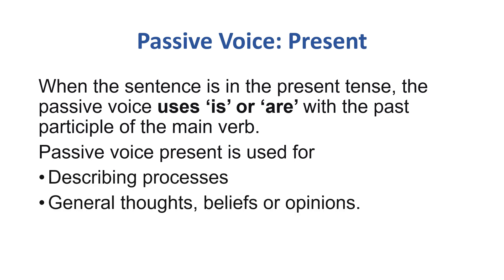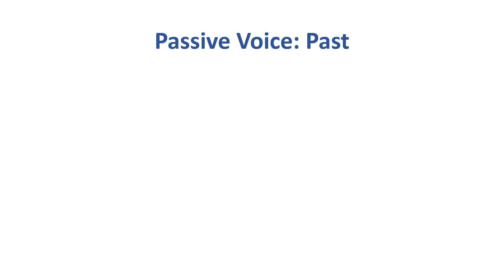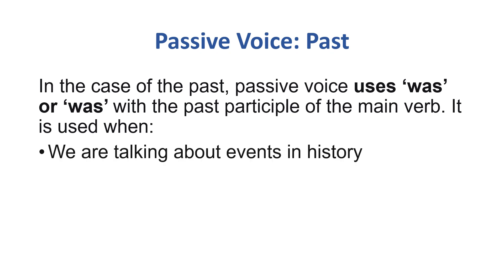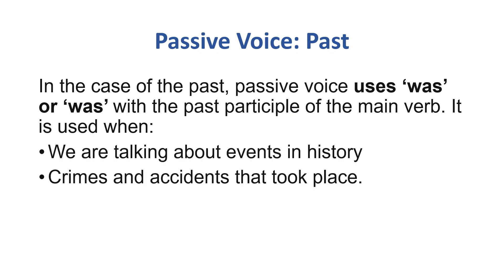Passive voice in present tense is used for usually describing processes, general thoughts, beliefs, or opinions. Now we are going to discuss passive voice in past tense. In past tense, the passive voice uses 'was' or 'were' with the past participle of the main verb. It is used when we are talking about events in history, crimes, and accidents that took place.